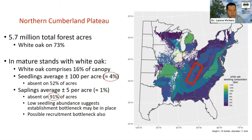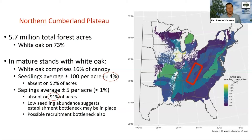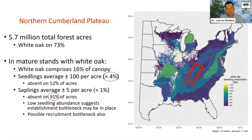Moving further west to the Northern Cumberland Plateau, there are around 6 million total forest acres with White Oak present on 73% of them. White Oak makes up around 16% of the canopy in mature stands, but our seedling population only makes up about 4% of all understory stems. On around half of the acres there are no White Oak seedlings present at all. Saplings are even more concerning — only five White Oak saplings on average per acre, making up around 1% of all saplings, and on a whopping 91% of acres there are no White Oak saplings in mature stands.